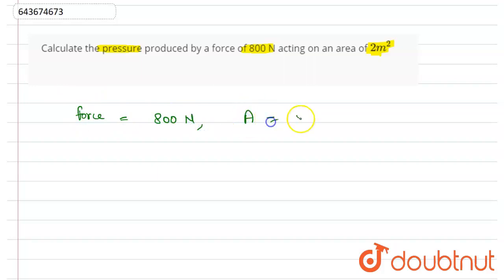also area is given, which is 2 meter square. So Newtons and meter square—that means we do not need to change the units. What we need to find out is pressure. Pressure, we know, is equal to force upon area.